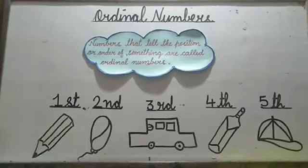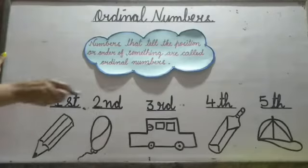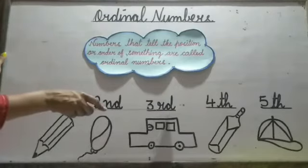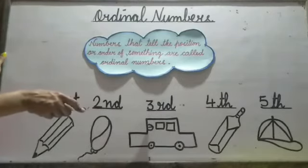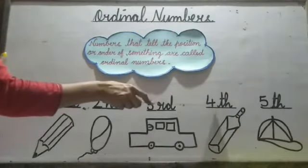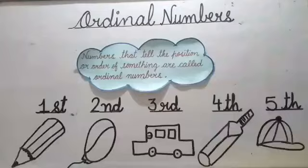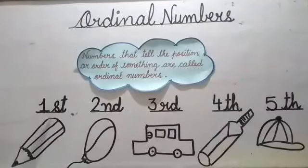Kids, when we add ST to 1, we will read it as first. When we add ND to 2, we will read it as second. When we add RD to 3, we will read it as third. When we add TH to 4, we will read it as fourth. When we add TH to 5, we will read it as fifth. These are called Ordinal Numbers.